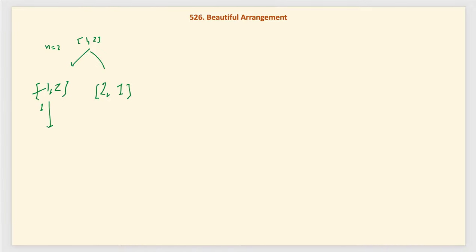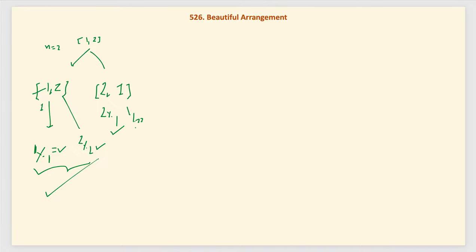We check whether the number at each position satisfies the rule using modulo. For [1, 2]: 1 mod 1 is 0 — yes, and 2 mod 2 is also 0 — yes. Both numbers satisfy the rule, so this is a beautiful arrangement. For [2, 1]: 2 at position 1 satisfies because i=1 divides everything, and 1 at position 2 satisfies the second rule (i divisible by number). Both rules are satisfied, so this is also a beautiful arrangement. Total beautiful arrangements: 2.